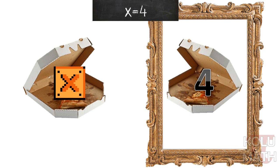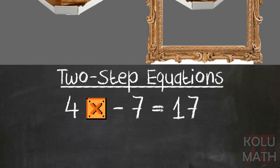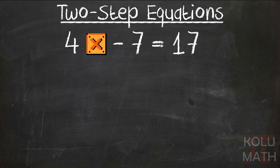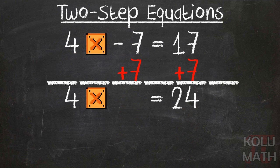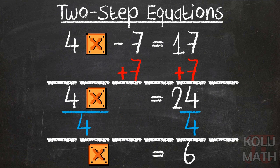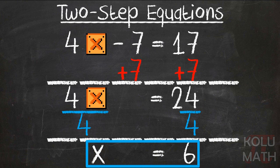Let's take a look at a similar example. We've got 4x minus 7 equals 17. We've got to deal with that 4 out front and that negative 7 in the back. So let's deal with that minus 7 — to take care of a negative 7, we're going to add 7 to both sides, giving us 4x equals 24. Then we divide both sides by 4, which gives us x equals 6.